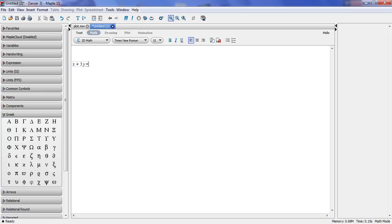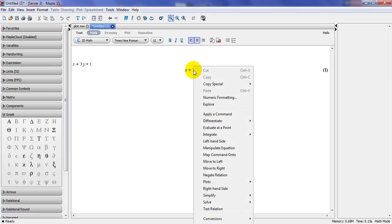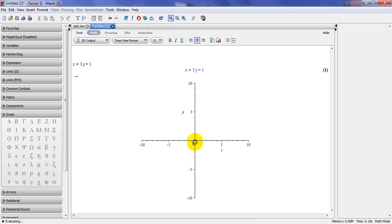x plus 3y equal to 1. And if you want to plot just a line here in x and y coordinates, collision 2D, right click, plot, and this is what you get.